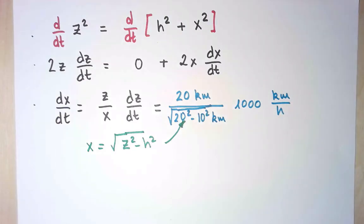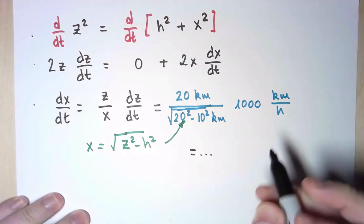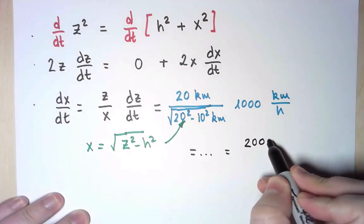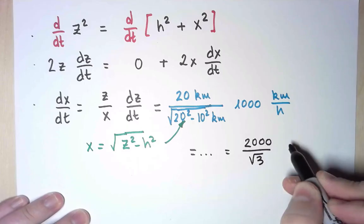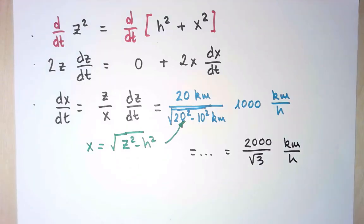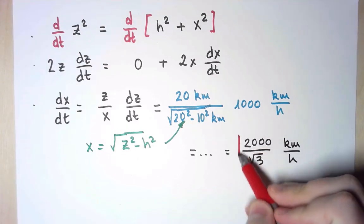And now let's simply compute this number, and this comes out to be 2,000 over root 3 kilometers per hour. And that is the speed of the plane.